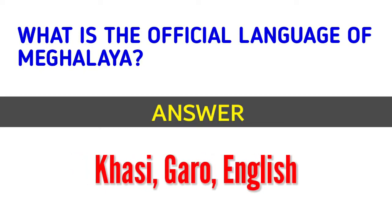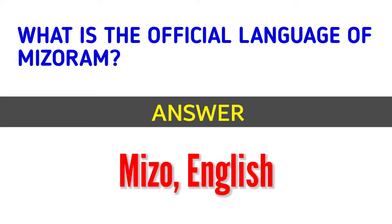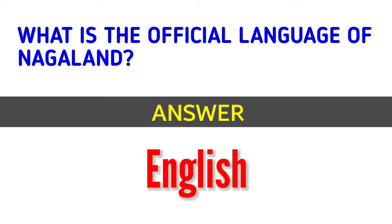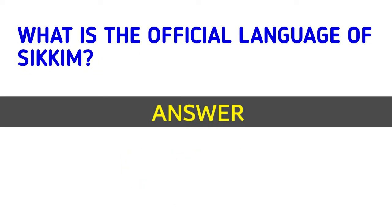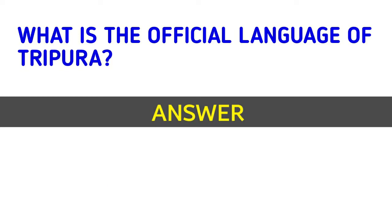What is the official language of Mizoram? Answer: Mizo and English. What is the official language of Nagaland? Answer: English. What is the official language of Sikkim? Answer: Nepali and English.